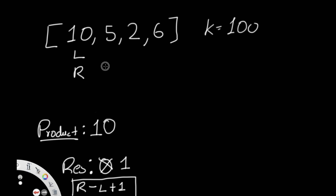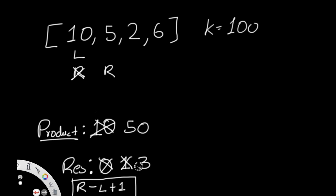We move right to index 1. The product becomes 10 × 5 = 50, which is less than 100. So we compute right minus left plus 1: 1 - 0 + 1 = 2. Result becomes 1 + 2 = 3. The 2 accounts for the subarray [10, 5] and the element [5] by itself — so both combinations are captured.